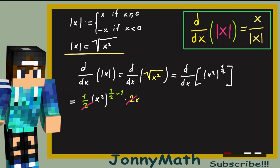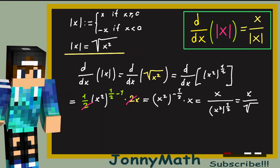Now we can simplify the 2s. This equals x squared to the negative one-half times x, which equals x divided by x squared to the one-half power — that is, x divided by the square root of x squared. Notice that the square root of x squared is just the absolute value of x, so this equals x over the absolute value of x.